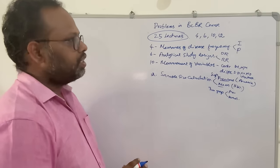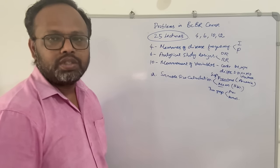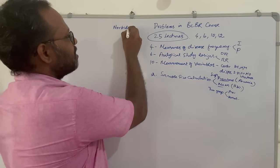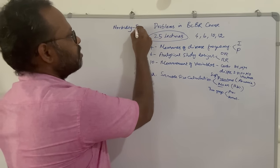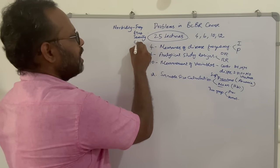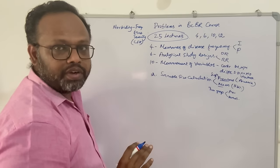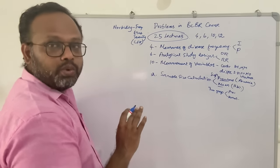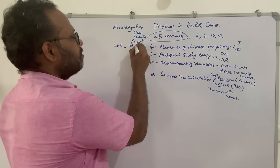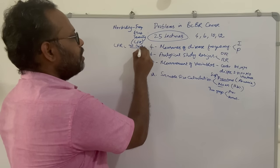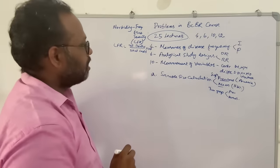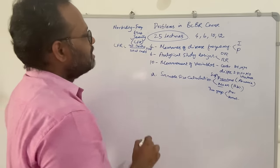Starting with incidence and prevalence, that is the 4th chapter — Measures of Disease Frequency. Measures of disease morbidity will be calculated in terms of frequency, disability and severity. For severity, we use the case fatality rate (CFR), which hasn't been given as a problem in the BCBR course but you need to know it since it is mentioned in the slides. CFR is total number of deaths due to the disease divided by total number of cases, expressed as a percentage with a multiplication factor of 100.